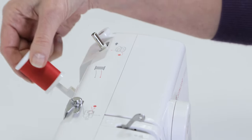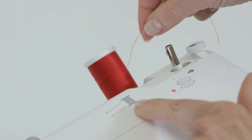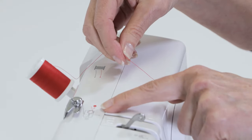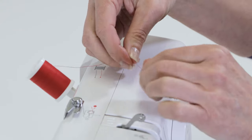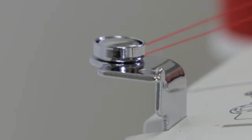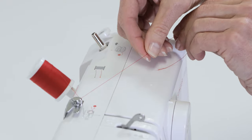Set your spool of thread on your spool pin, and then bring the thread, like it shows here, from the spool to the bobbin winding tension disc. In and around the bobbin winding tension disc, and pull the thread so it slips snugly into the disc.